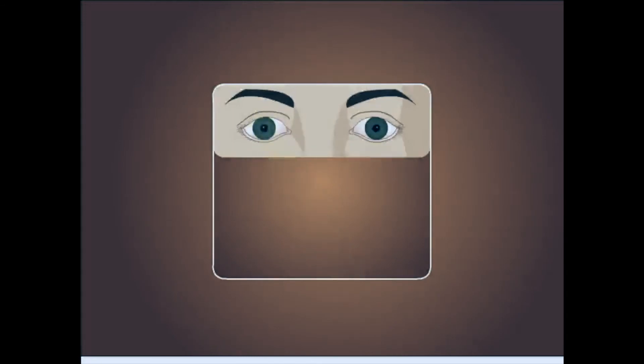In contrast, the response to accommodation and convergence remains intact. Argyll Robertson pupils present with light-near dissociation. This term is used when pupils don't react to light but accommodate to near vision.